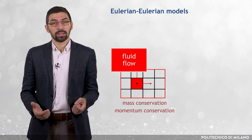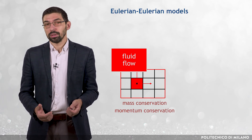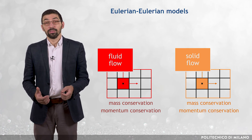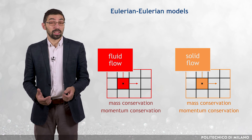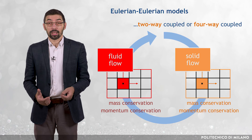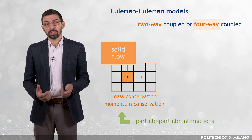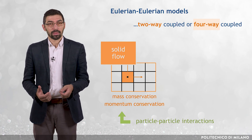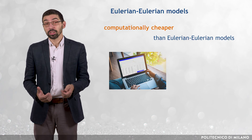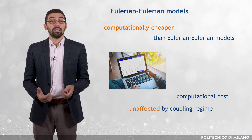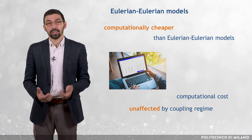What happens in Eulerian-Eulerian models? In this type of models, mass and momentum conservation equations are solved for both phases in a coupled manner. This implies that the influence of the solids on the fluid flow is always accounted for, even when this effect is very small. So Eulerian-Eulerian models are either two-way coupled or four-way coupled. Particle-particle interactions, if accounted for, are modeled through the formulation of the momentum conservation equation of the solid phase. As a result, Eulerian-Eulerian models are computationally cheaper than Eulerian-Lagrangian models, and their computational burden is substantially unaffected by the coupling regime, and therefore by the amount of solids in the flow. In practice, Eulerian-Eulerian models are the only CFD models applicable to engineering processes involving dense particle-laden flows.